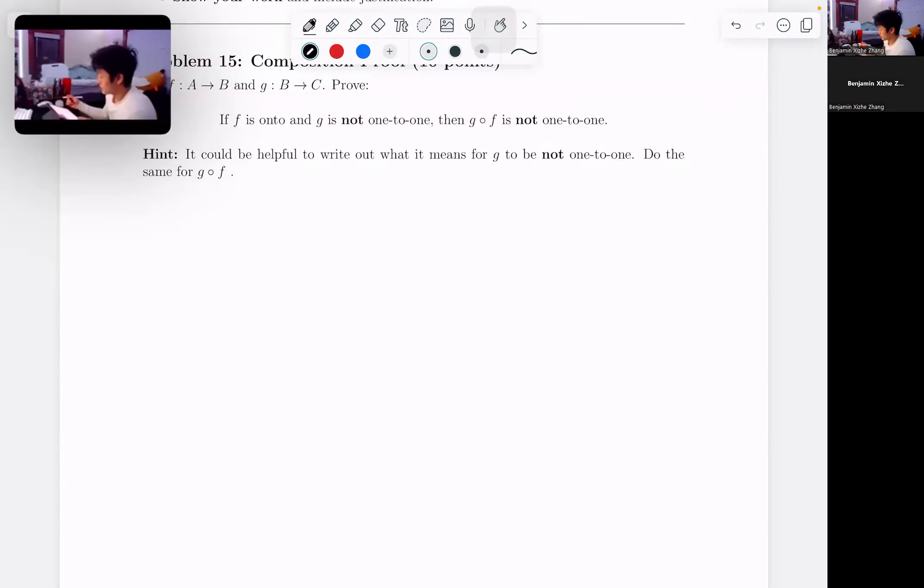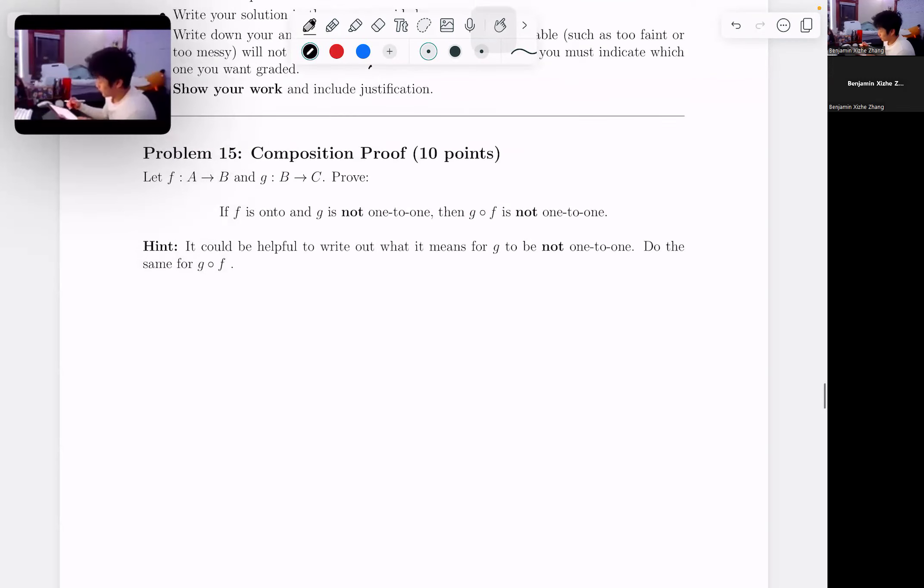Okay, this is question 15 of practice exam number two. We have the function f mapping A to B, and the function g mapping B to C. And we want to prove that if f is onto and g is not one-to-one, then g of f is also not one-to-one.